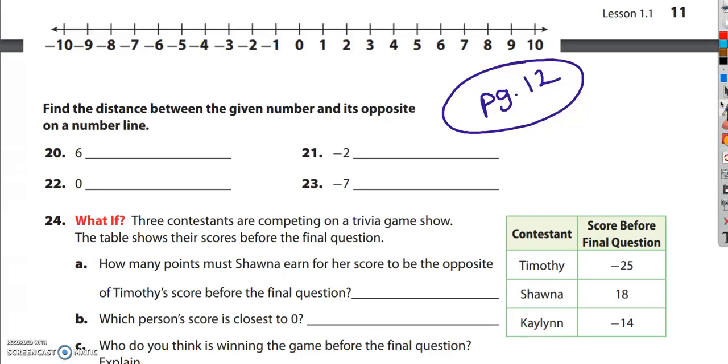Read carefully, it says between the given number and its opposite. The given number is 6 and 6's opposite is negative 6. The distance between 6 and 0 is 6 spaces and then to get to negative 6 it's 6 more spaces. So it's a total of 12 spaces.